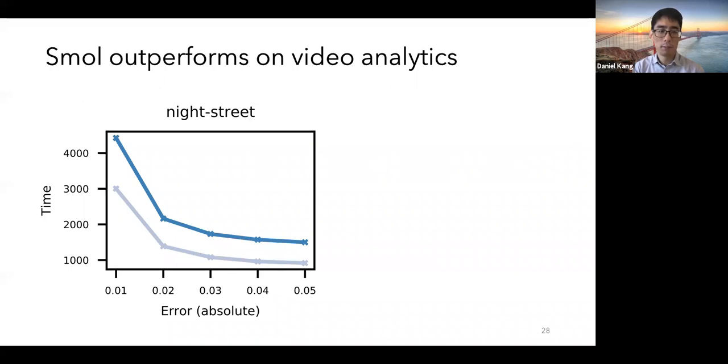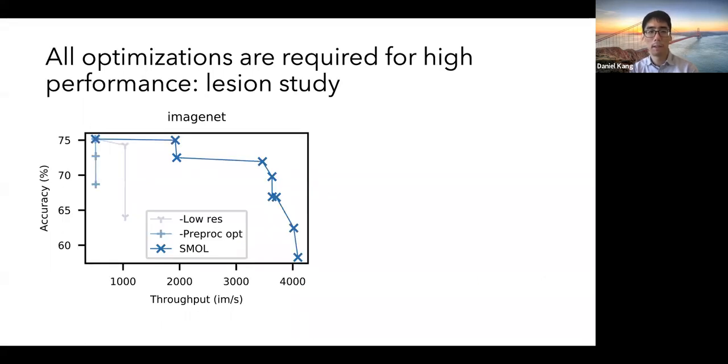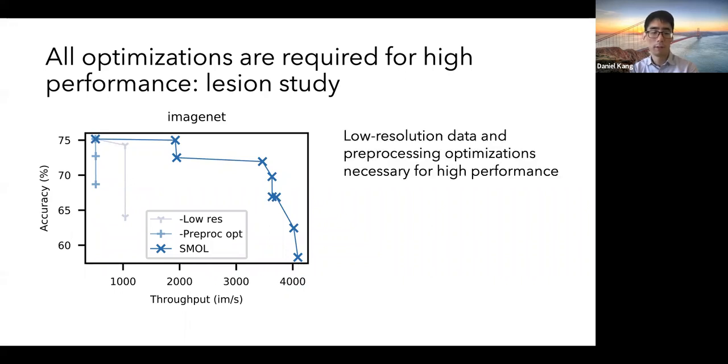Similarly, here Smol is on the bottom, and the baseline of Blazor is on the top. The reason Smol is faster is because it selects larger but more accurate models as proxies, and so this results in faster query execution because we have to query the oracle fewer times. And finally, I show that all optimizations are required for performance using a lesion study, both the low-resolution visual data and the pre-processing optimizations.